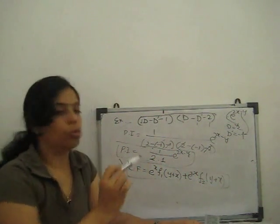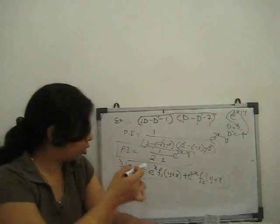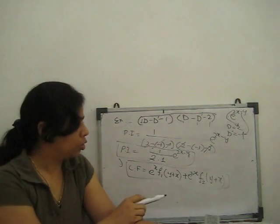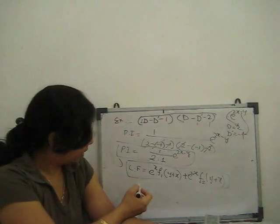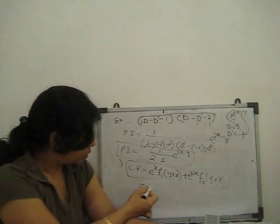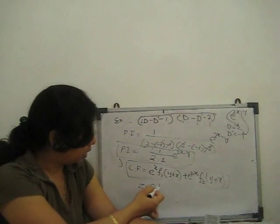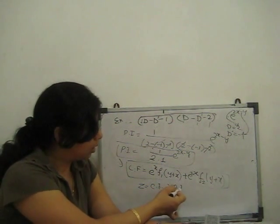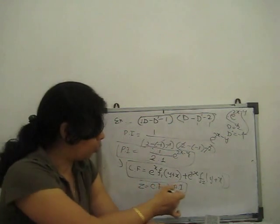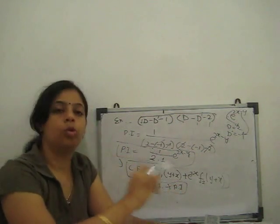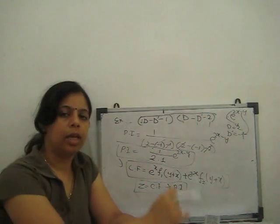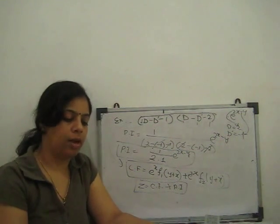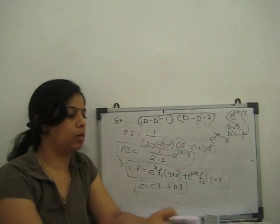The complete solution is z = CF + PI. It is very easy once you know how to write it, because the method for finding the particular integral is the same as in the previous question.